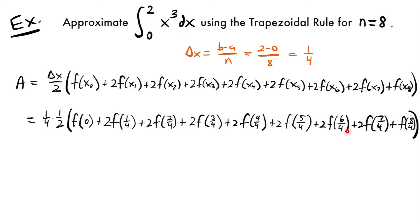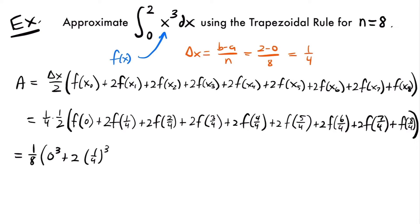Some of these fractions can be reduced: 2 fourths is 1 half, 4 fourths is 1, and 8 fourths is 2. We'll apply those reductions when we plug each value into our function, which is x cubed — because that is inside our integral. This equals 1 eighth, since 1 fourth times 1 half is 1 eighth, multiplied by f of 0, which is 0 cubed. Plus 2 times 1 fourth cubed, plus 2 times 1 half cubed.